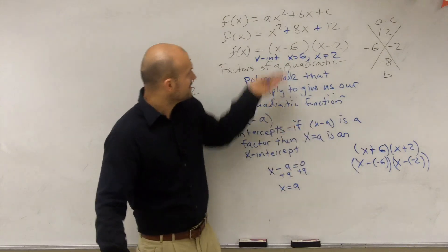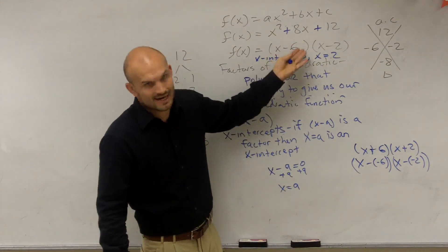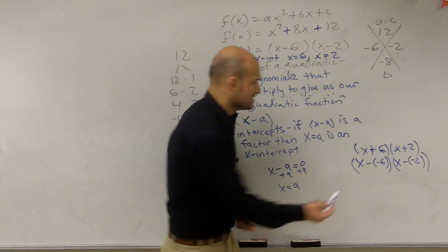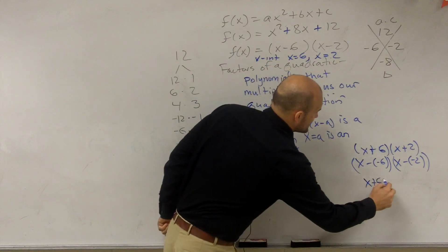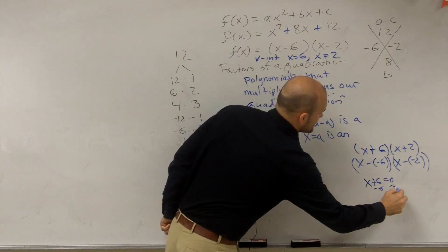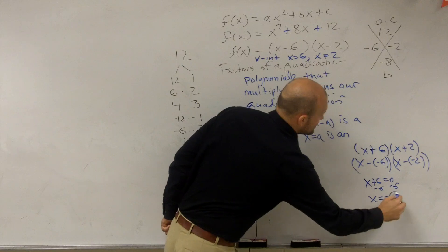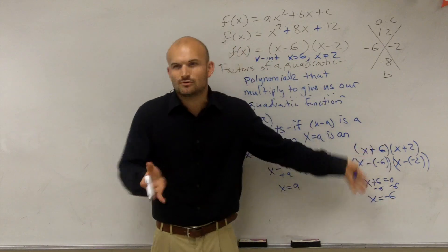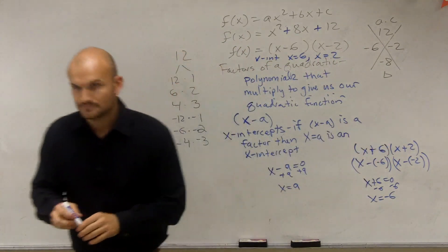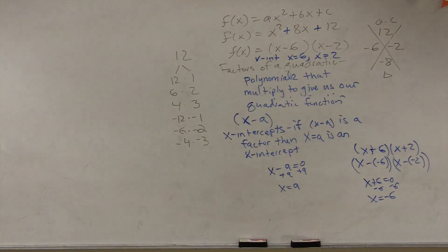x + 6 = 0, minus 6. So your x-intercept for this problem would be x = -6. Just set it equal to zero and solve. All right. Long enough video. Ten minutes.